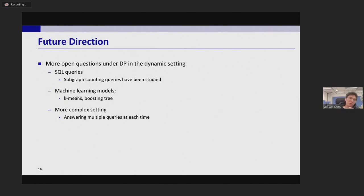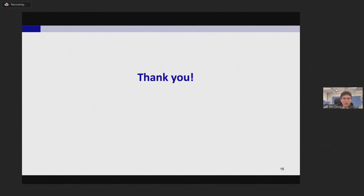Finally I list our future directions. Actually compared with static settings there are more open questions in the dynamic setting under both event-DP and user-DP. The first interesting problem is to answer SQL queries in the dynamic setting. Recently we have seen some works for answering subgraph counting queries which are special cases of SQL queries. Another interesting topic is to release machine learning models like k-means and decision tree in the dynamic setting. Besides it's also very interesting to consider a more complex setting where we answer multiple queries at each time.